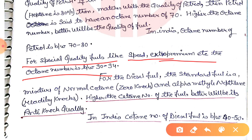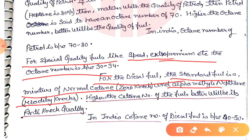For diesel fuel, the anti-knock quality is measured using the cetane number, not the octane number. The cetane number of diesel is between 40 to 50. The standard fuel used for diesel is a mixture of cetane, which has a cetane number of 100, and alpha-methylnaphthalene, which has a cetane number of zero — mixed in equal ratios.